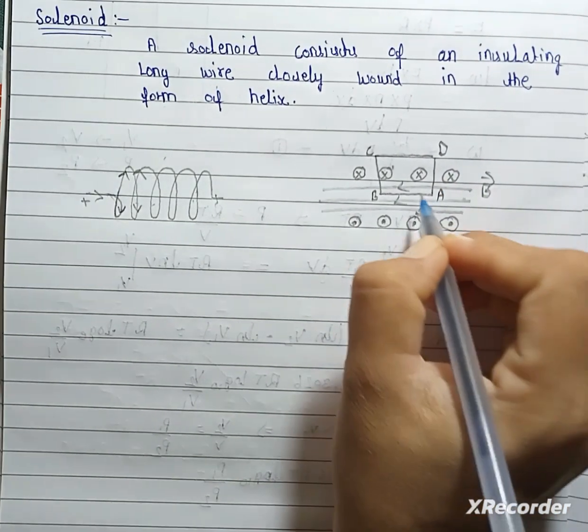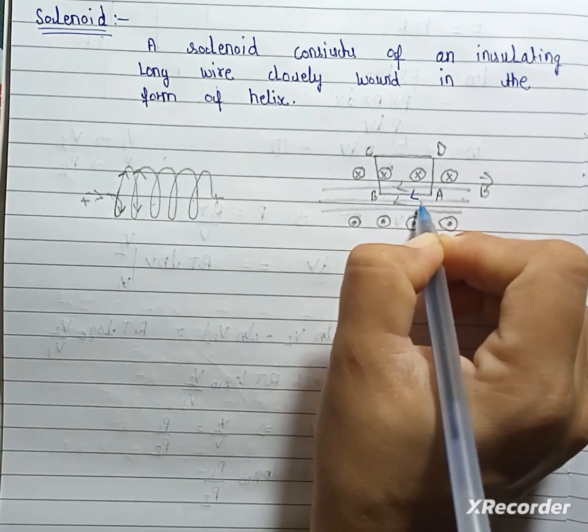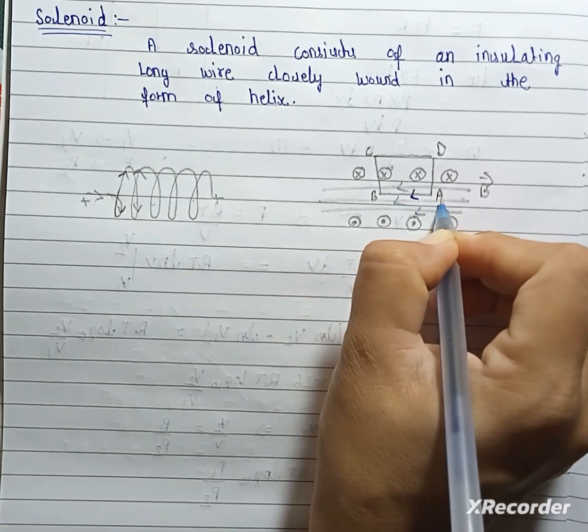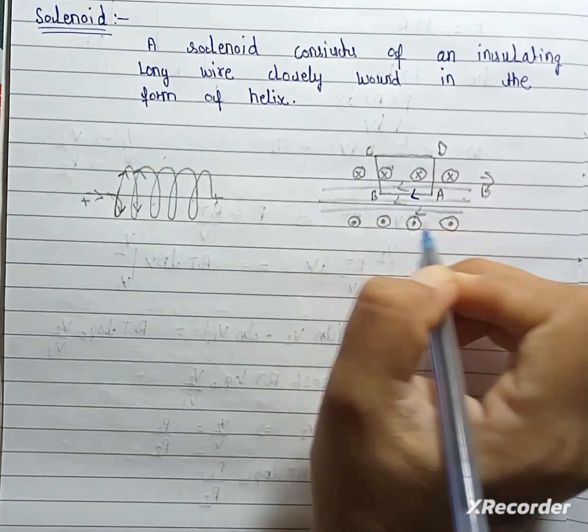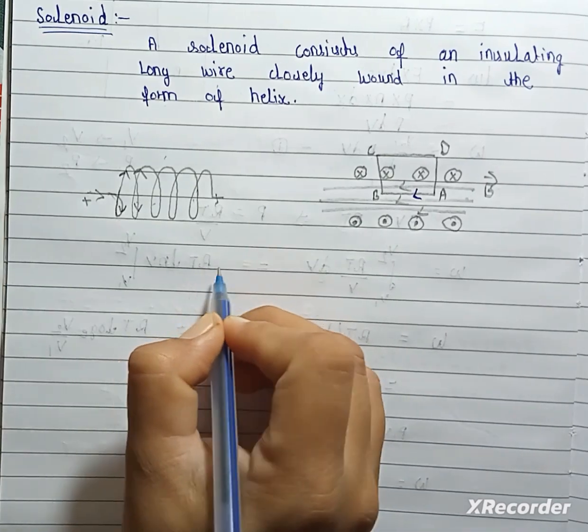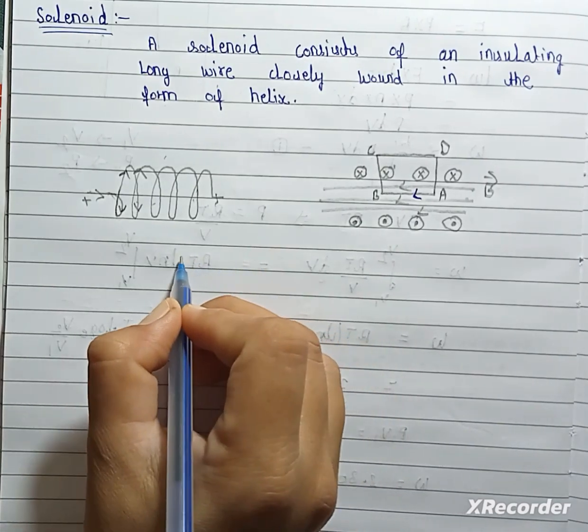Now, magnetic field is parallel to AB. We know for ampere circuital loop.